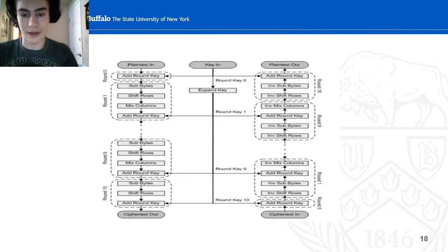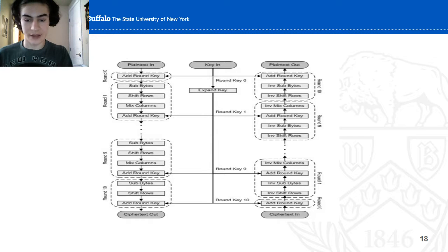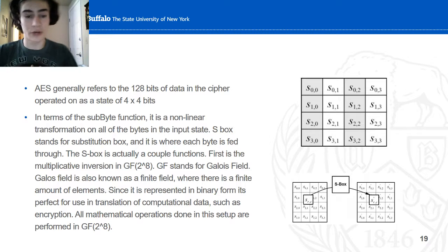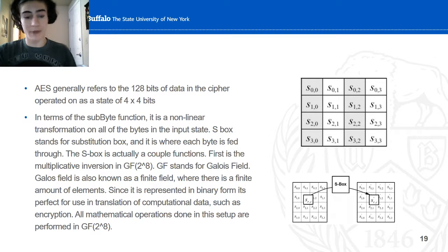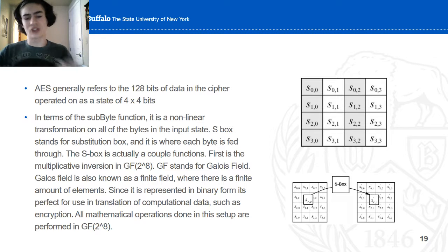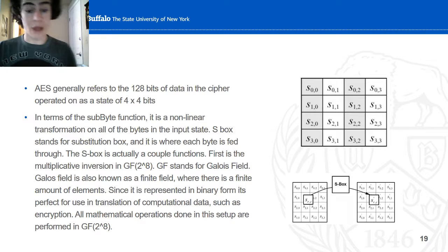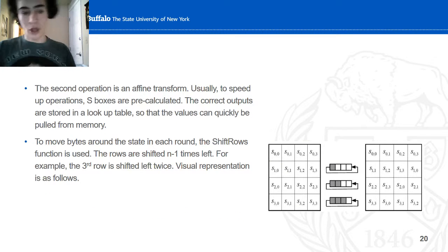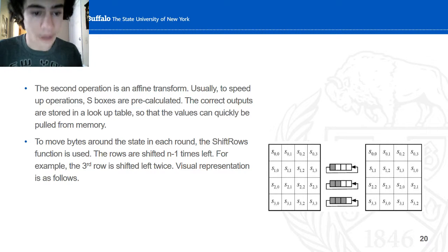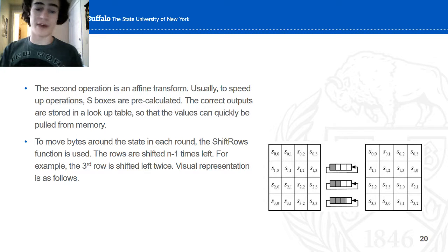This is an overall block diagram showing the calculations and transformations when the key comes in — plaintext in, plaintext out. AES generally refers to 128 bits of data in the cipher, operated on a 4x4 byte state. In terms of the sub-byte function, it's a non-linear transformation on all the bytes in the input state. S-box stands for substitution box. The S-box is actually a couple of functions — the multiplicative inverse in GF (Galois Field, also called a finite field) — represented in binary form for computational purposes, which is why it's used in cryptography. The second operation is an affine transform. S-box values are pre-calculated so that the outputs can be stored in a lookup table, making them easily retrievable and faster than calculating on the fly.